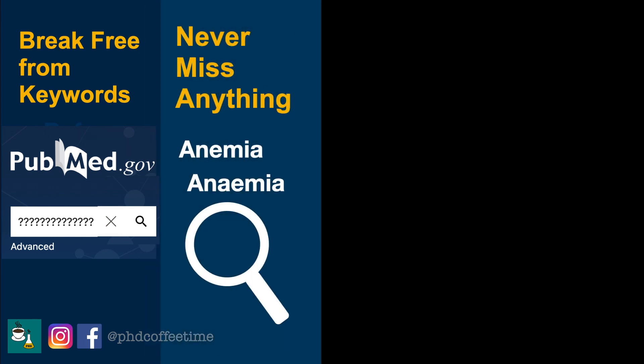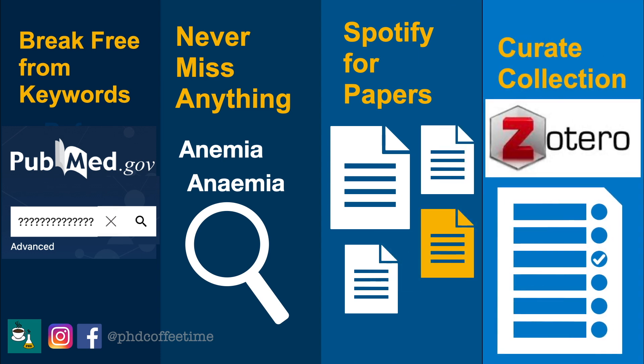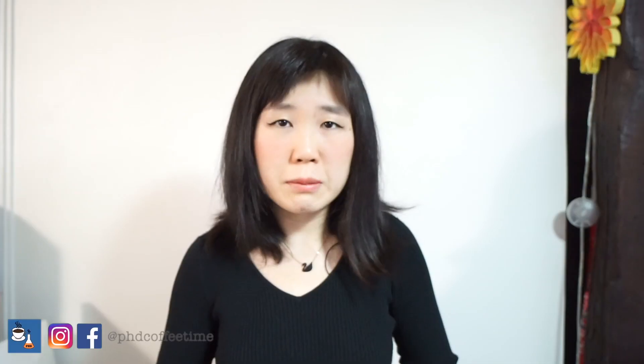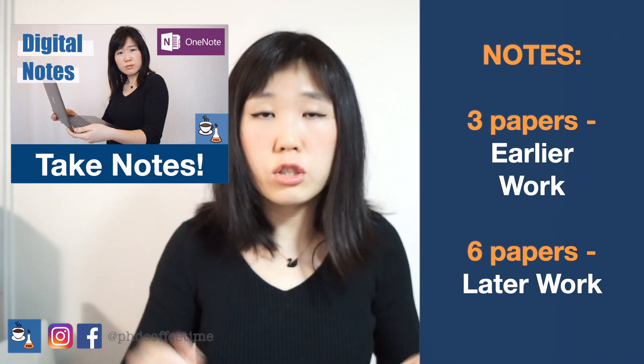As a recap, Research Rabbit is a great platform that lets you break free from keyword searches and make sure you're not missing anything beyond your reference list. Like Spotify for papers, it suggests new references as you use it. You can export the list to Zotero. I caution everyone: always write down your immediate thoughts on how each paper informs your research. Research Rabbit is just a vehicle — you are the driver, and you can still get mesmerized by the network and connections.